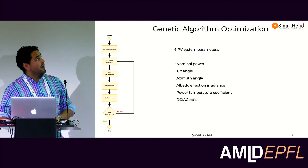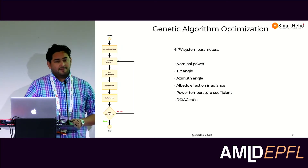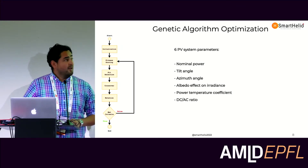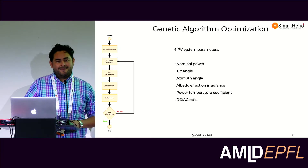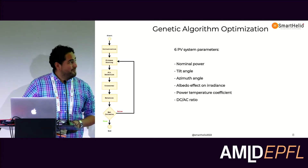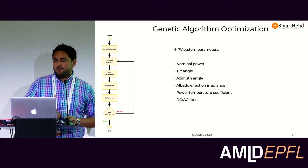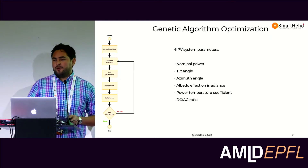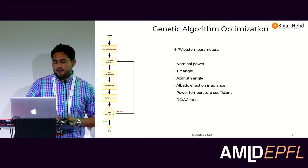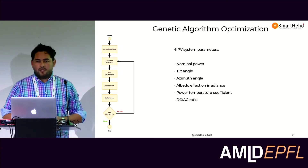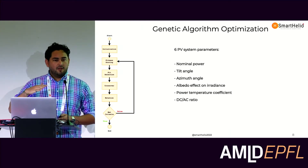How can we apply this to the PV world? For this example, we define six PV system parameters — slightly fewer than the parameters discussed in the presentation before. We know that with these six parameters we can actually simulate one PV system relatively accurately. I'll explain the parameters quickly. Nominal power is the installed capacity — how big the plant is. Tilt angle is the inclination of the panels toward the sun.